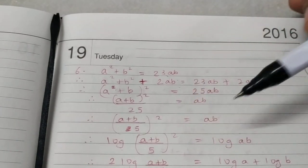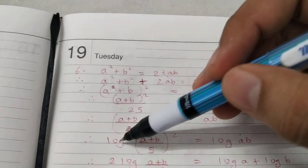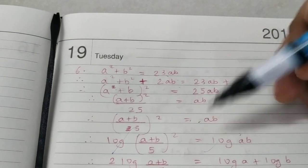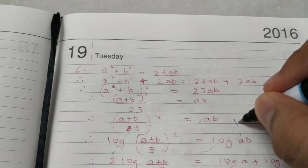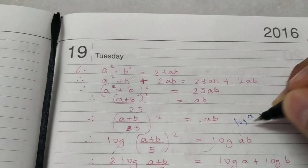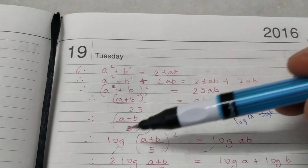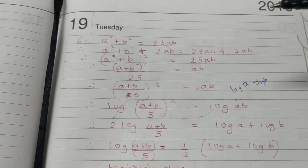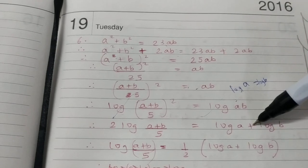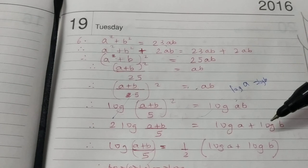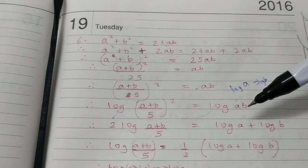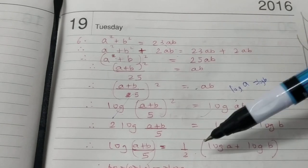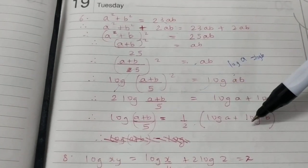Now, taking log on both sides. Till now we always had a logarithmic equation and got rid of the log, but now we're doing the reverse — introducing log on both sides. If a equals b, then log of a equals log of b, assuming bases are the same. The base is 10, though we're not writing it. The square becomes a coefficient, and multiplication becomes addition of logs. Keep checking the question. This 2 will go to the other side and become half — and that's what they wanted to prove.